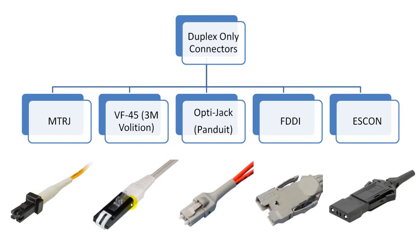The next duplex-only connector is called VF45, also called the 3M Volition connector. It is a slick duplex connector with no ferrules at all. It aligns fibers in a V-groove like in a mechanical fiber splice. OptiJack is a duplex connector from Panduit. OptiJack has two 2.5mm ferrules just like regular SC connectors, and the size of OptiJack is that of an RJ45 connector. FDDI and SCON connectors are both duplex connectors with 2.5mm ferrules, often used to connect equipment from a wall outlet. They can be made to SC or ST connectors with adapters.